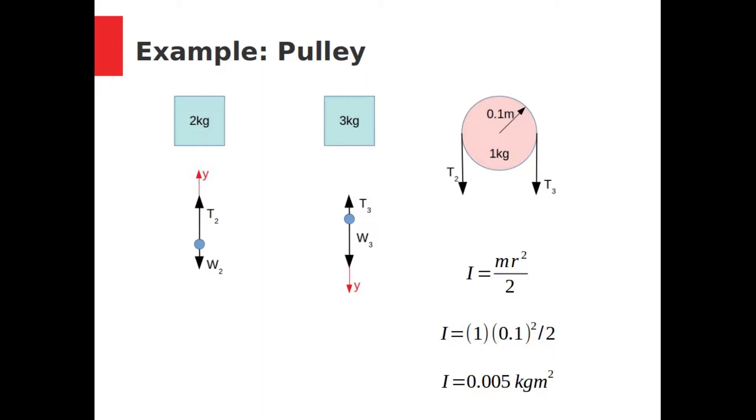The moment of inertia of the wheel is calculated as m r squared over 2, similar to how we did it in the previous puzzle. It is 0.005 kg meters squared.